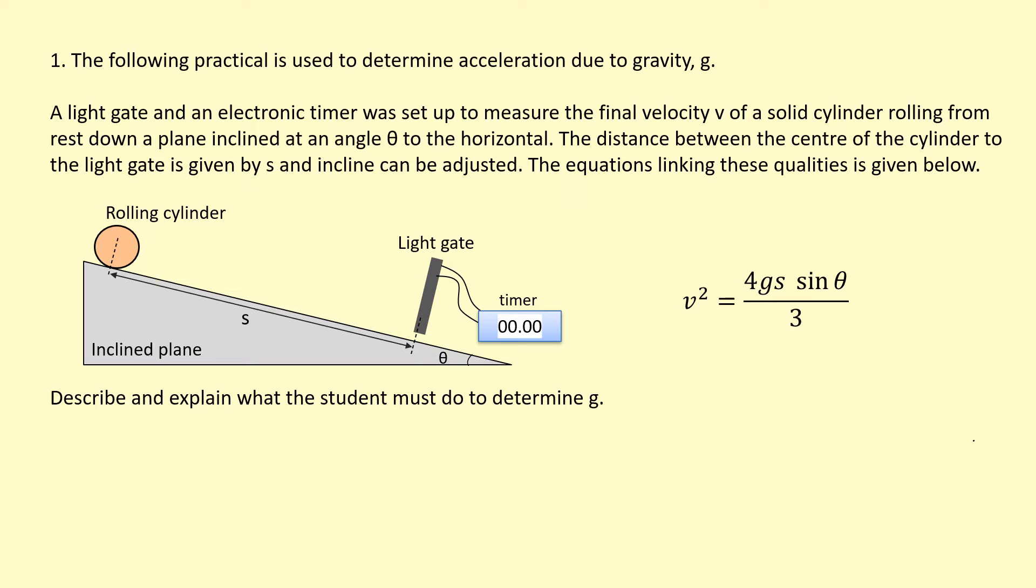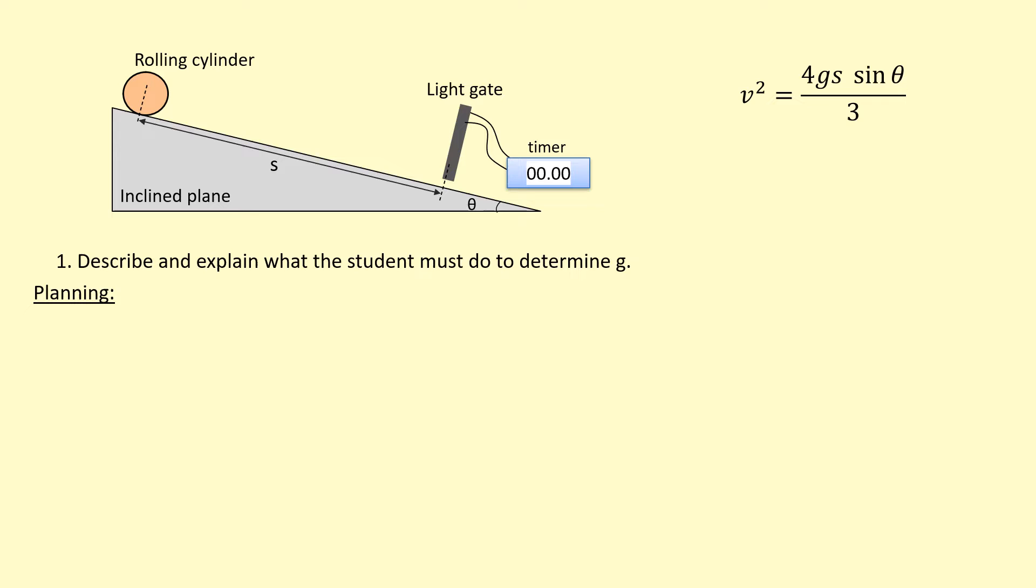Here's an equation that links it. V is the speed at which it goes to the light gate. G is the gravitational field strength we're trying to find. S is the distance there, sine theta is the angle. We're going to describe and explain a method that a student can do to find G.